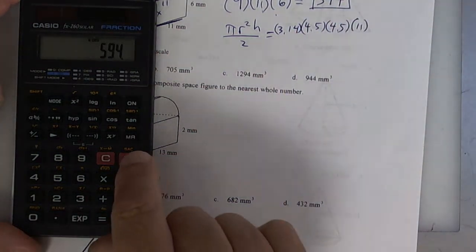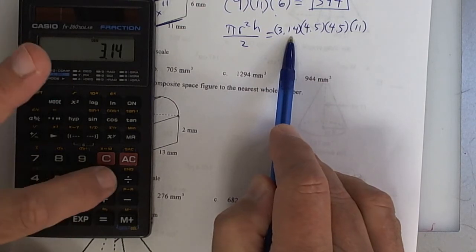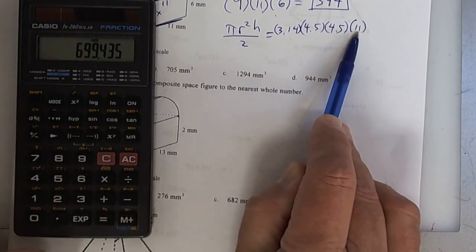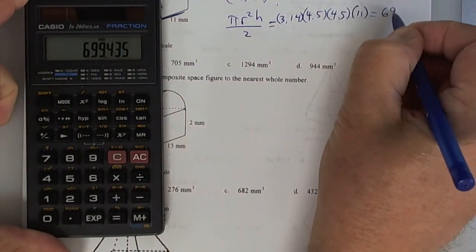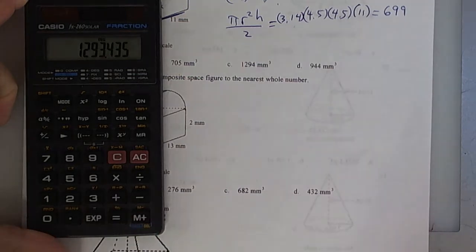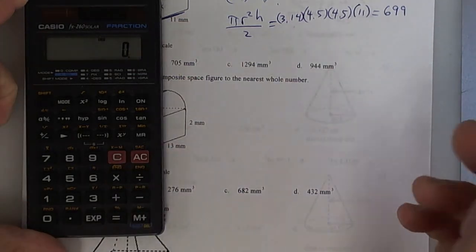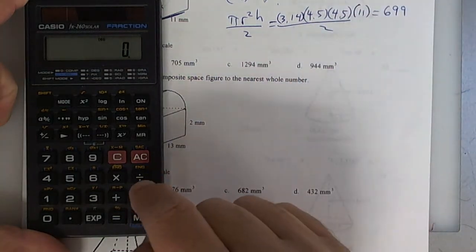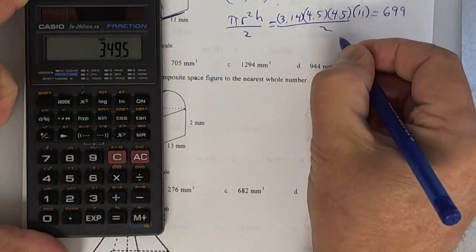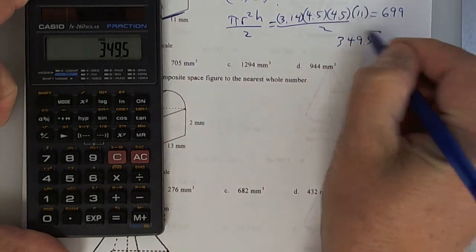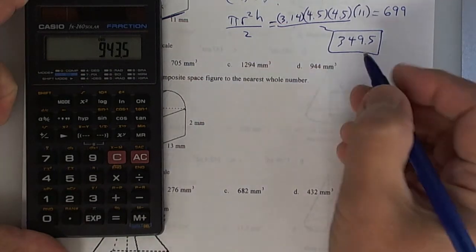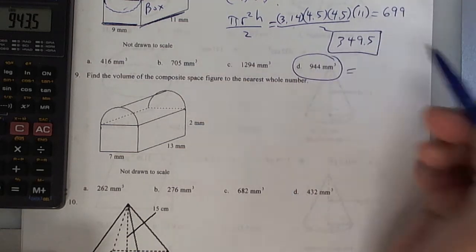Clear your calculator. Press 3.14 times 4.5 times 4.5 times 11, press equals — that came to about 699. Since we only want half the cylinder, divide by 2, giving 349.5. Then add 594 for the box. 349.5 plus 594 gives about 943. Go with that answer.